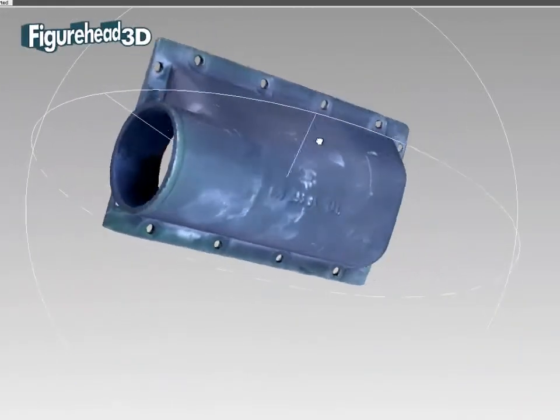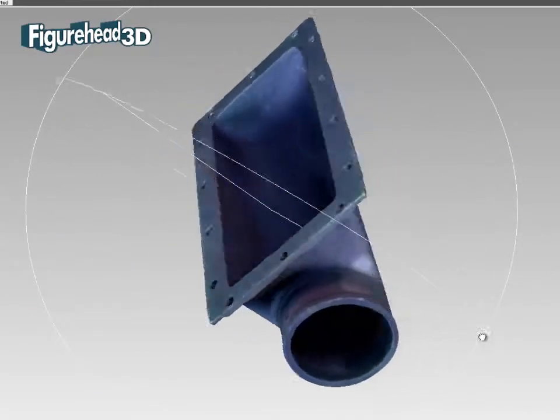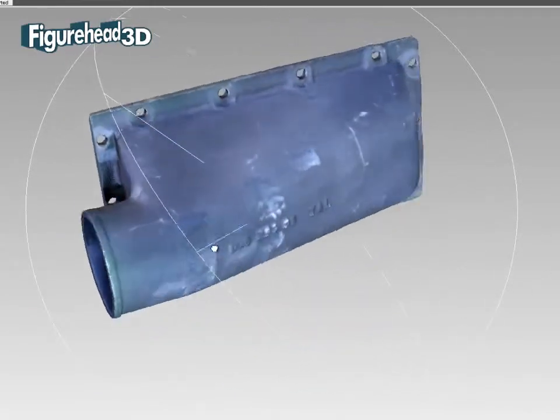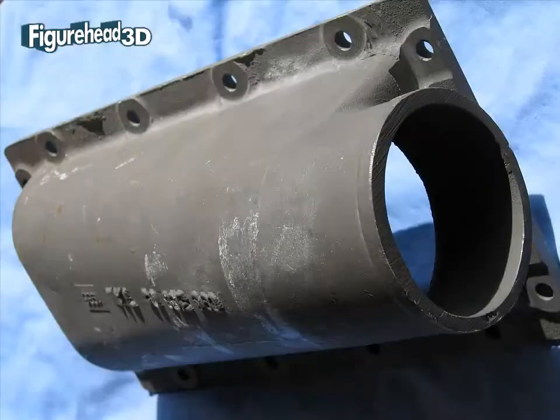This video is about an exhaust outlet for a large boat and shows how we used three-dimensional scanning to turn it into a digital computer model. We then reduced the size and flipped it over to make another one for the other side of the boat.